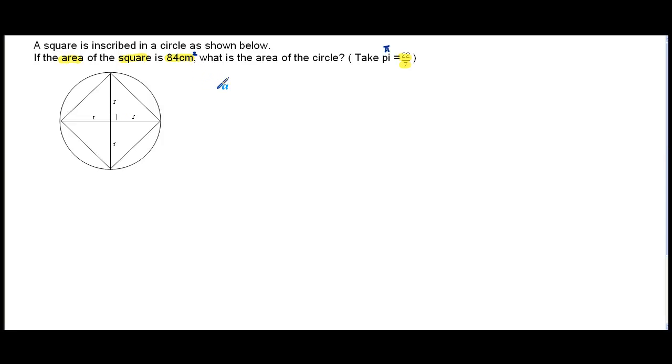So we are told that the area of the square is 84 cm². So we shall write it down first. Area of a square, 84 cm².